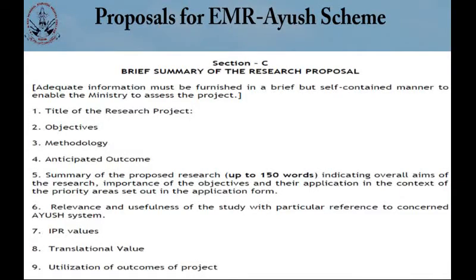Looking at examples such as proposals for EMR IUC scheme — extramural research schemes — these are available on the official website. For example, under section C, they mention that adequate information must be furnished in a brief but self-contained manner to enable the ministry to assess the project. They specify title of the research project, objectives, methodology, anticipated outcome, and a summary of the proposed research limited to 150 words.